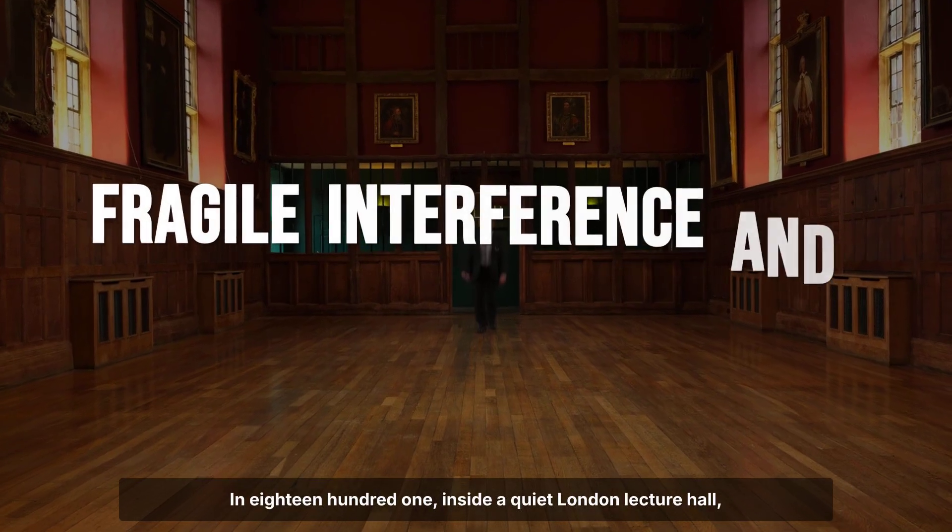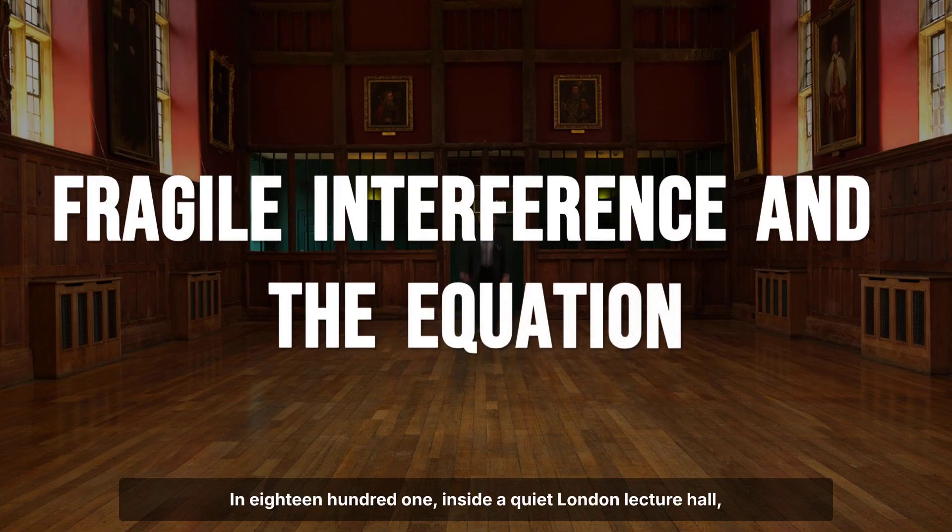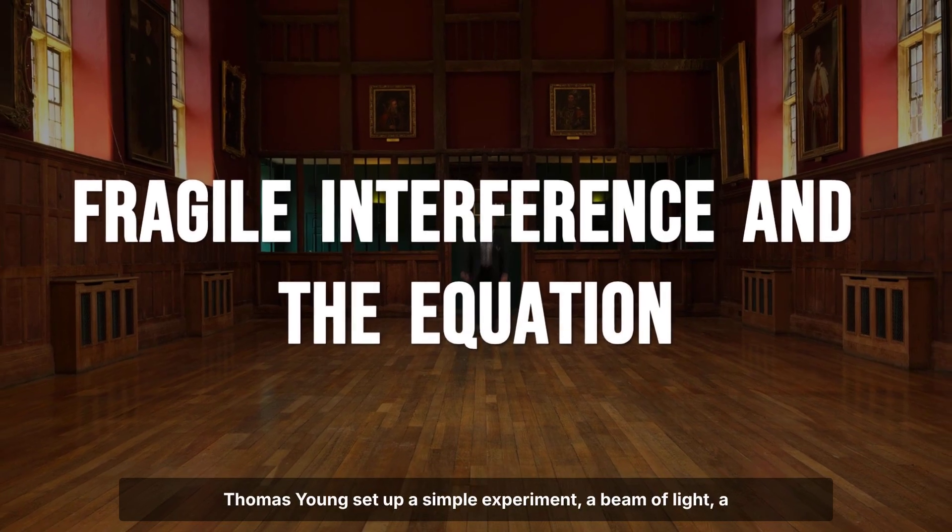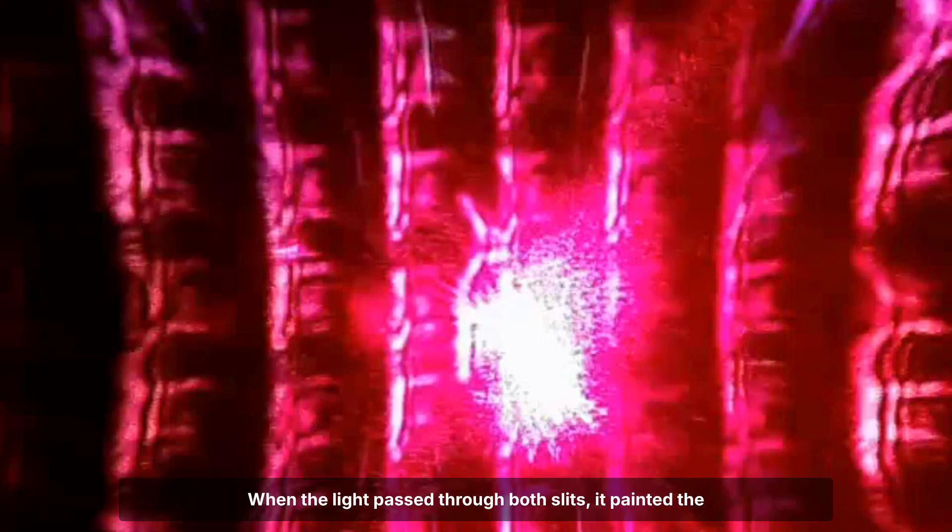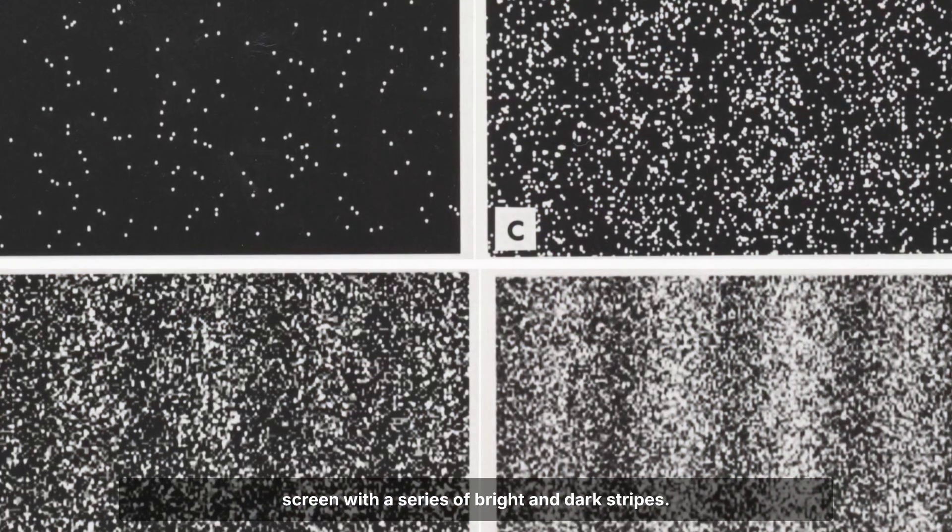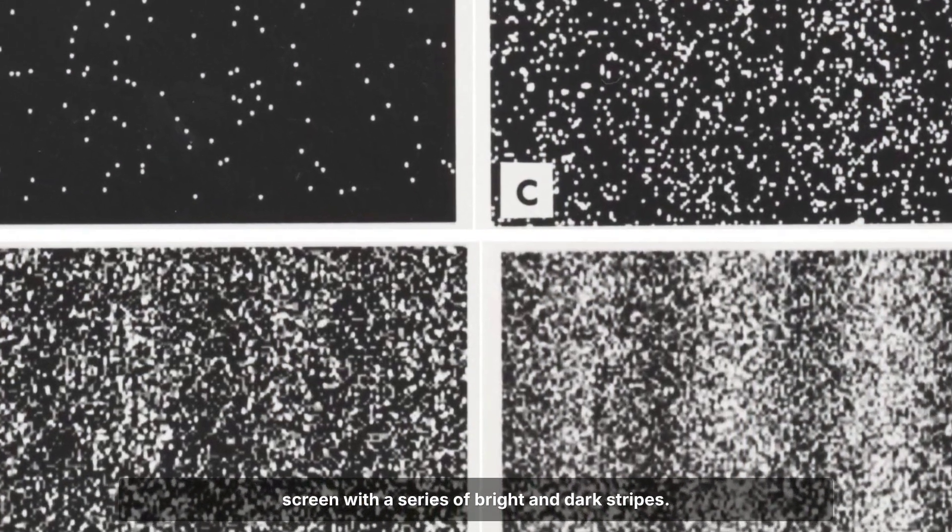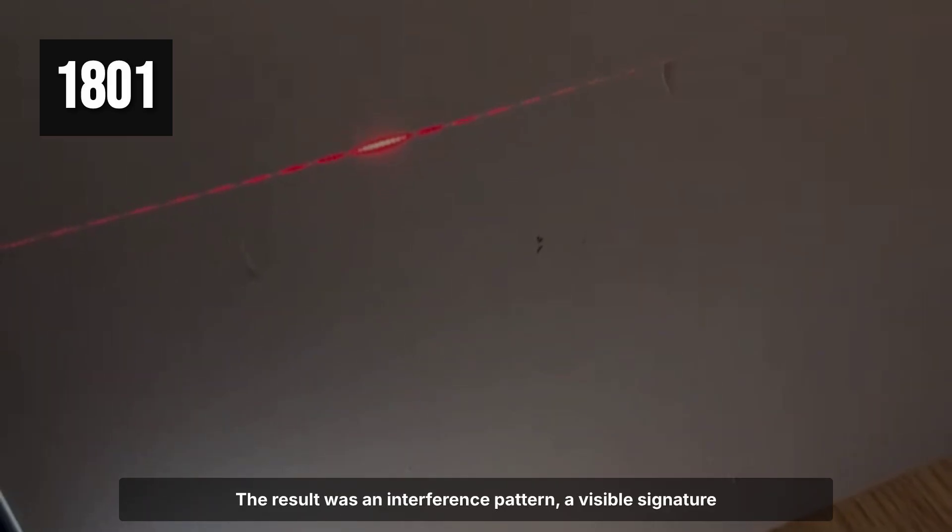In 1801, inside a quiet London lecture hall, Thomas Young set up a simple experiment. A beam of light, a barrier with two narrow slits, and a screen. When the light passed through both slits, it painted the screen with a series of bright and dark stripes. The result was an interference pattern.